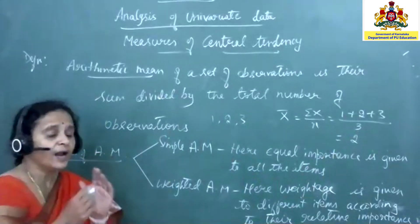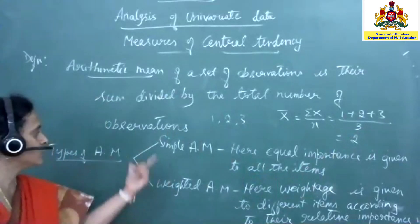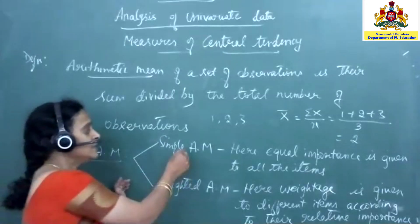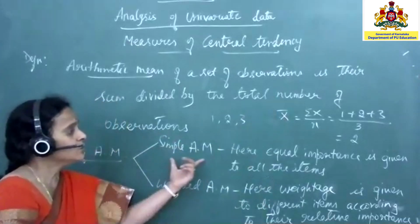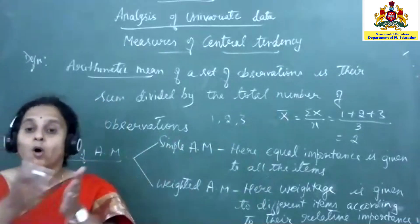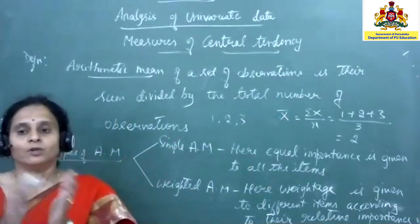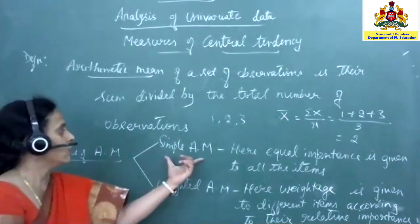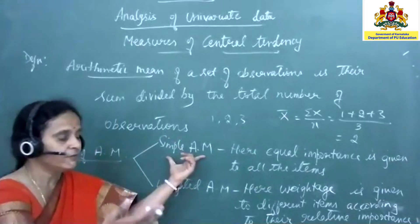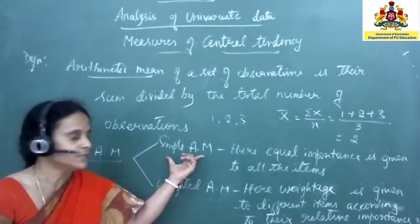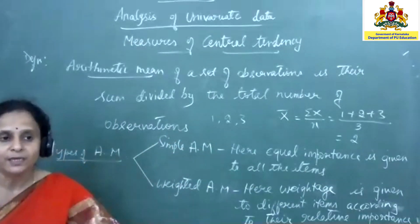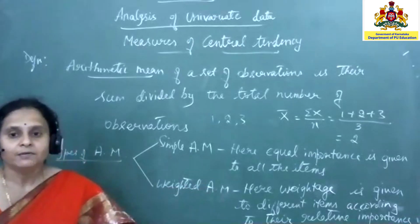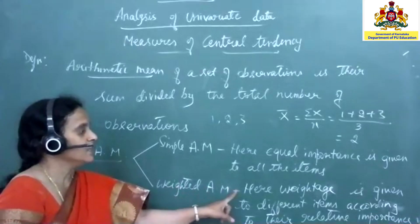In arithmetic mean, we have two different types: simple arithmetic mean and weighted arithmetic mean. In simple arithmetic mean, equal importance is given to all the items in the group without any differentiation. All observations are given the same importance — we call that the simple arithmetic mean.